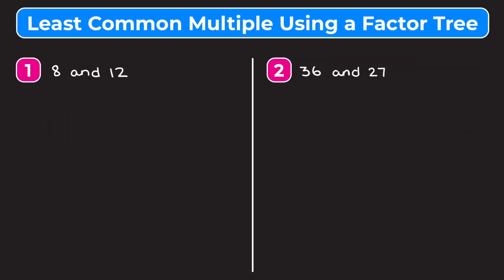In this video we're learning how to find the least common multiple between two or three numbers using a factor tree. A quick refresher: the least common multiple between two or more numbers is just the smallest multiple they have in common. Multiples are just numbers that a number goes into evenly, so some multiples of 8 would be 8, 16, 24, 32, and so on.